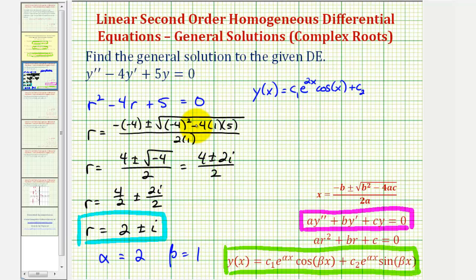Plus c sub 2, times e to the power of alpha x, which is 2x, times sine of beta x, or sine x in this case. This would be the general solution to the given differential equation.